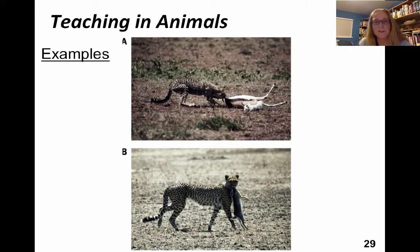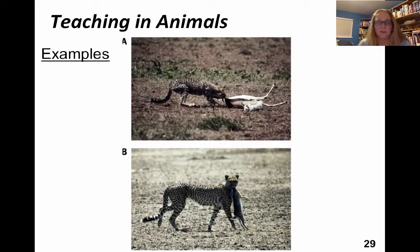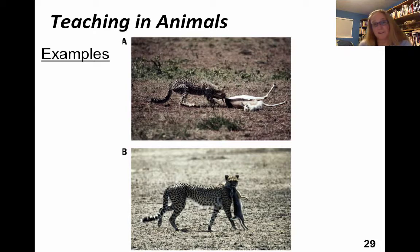As an example, cheetahs will serve as teachers to their own young. When they have young, they'll capture prey and bring it back to their offspring and let the offspring sort of pretend-kill that prey animal. The antelope really is already dead, but the cheetah mom allows her pups to pretend they're capturing that prey and they're getting practice. At that young age, the only prey they're able to successfully capture, because they're inexperienced, is something as small as a rabbit or a hare.